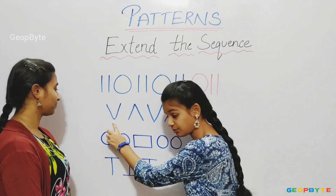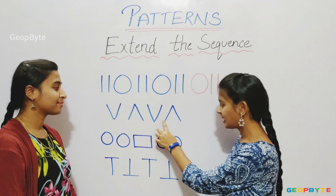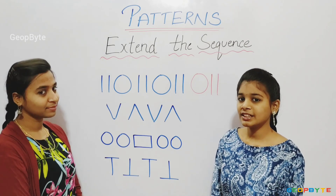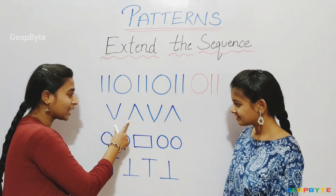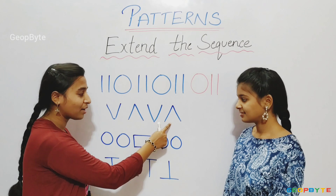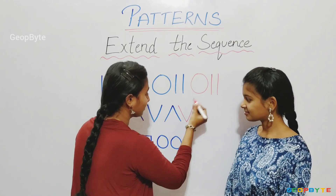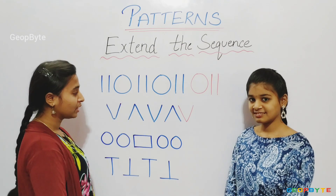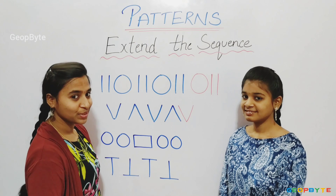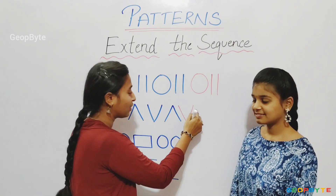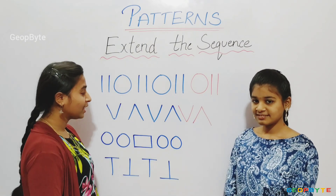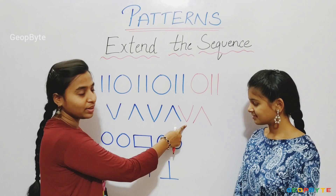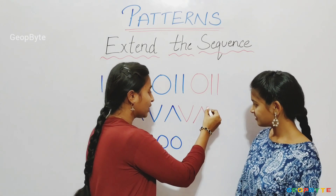See here: V, upside down V, V, upside down V. Which V comes after upside down V? V or upside down V? Let us see. After upside down V, we have a V. So, after upside down V, we get a V. Again, after V, we have an upside down V. So, after V, we get an upside down V. Again, after upside down V, we get a V.